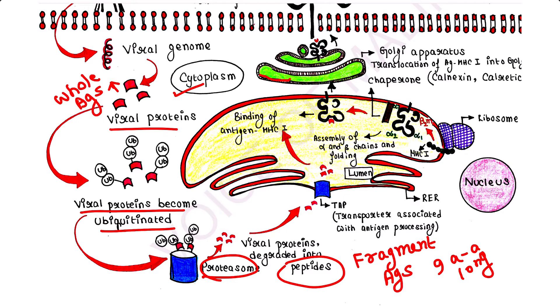These peptides travel to the rough endoplasmic reticulum. So this is the rough endoplasmic reticulum. These fragments travel to the rough endoplasmic reticulum. The membrane of rough endoplasmic reticulum consists of a protein.